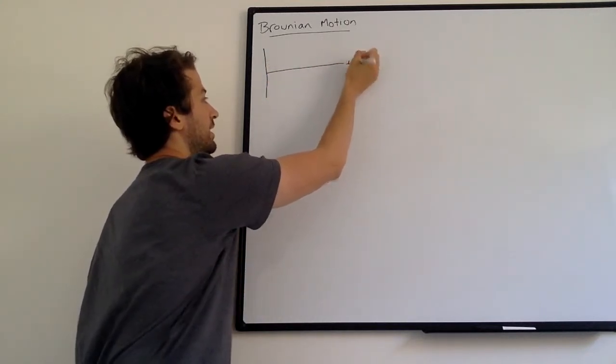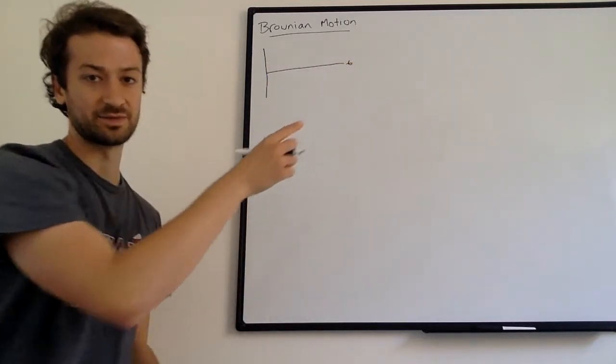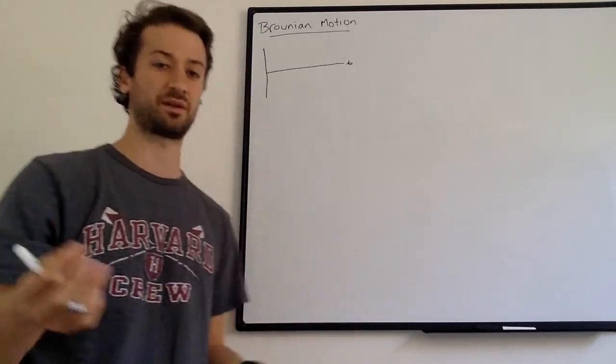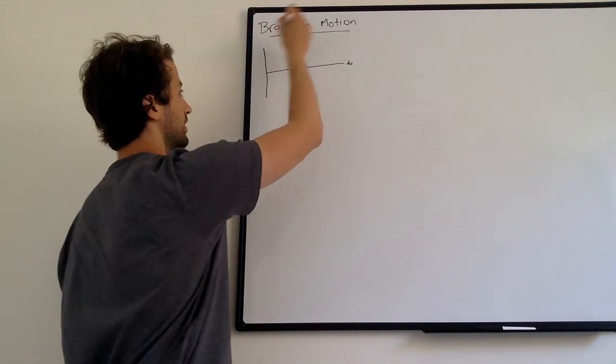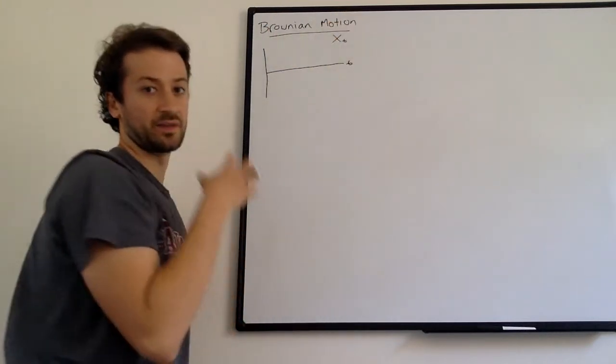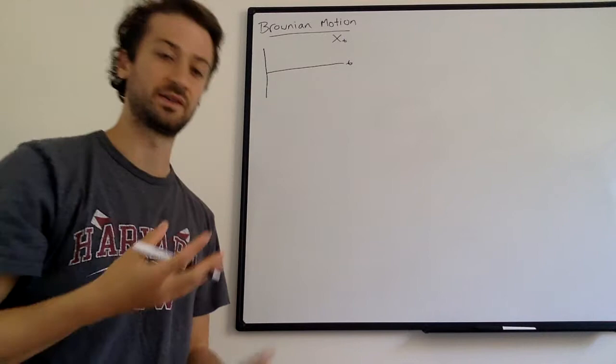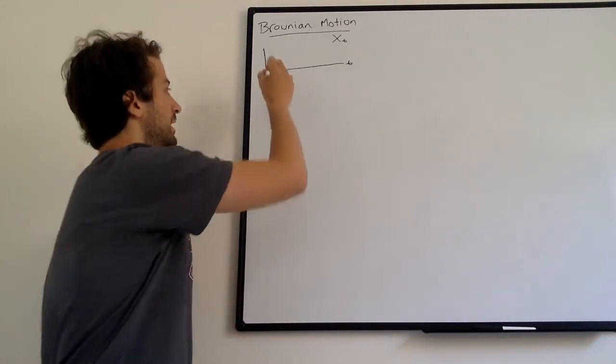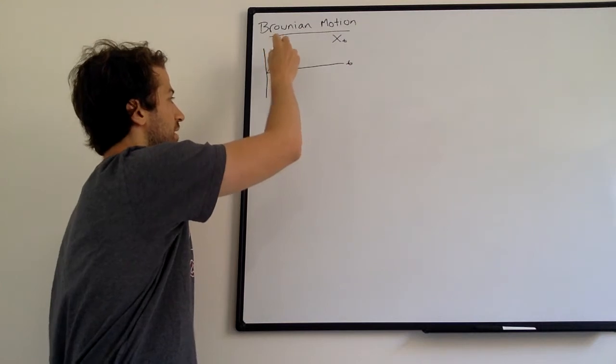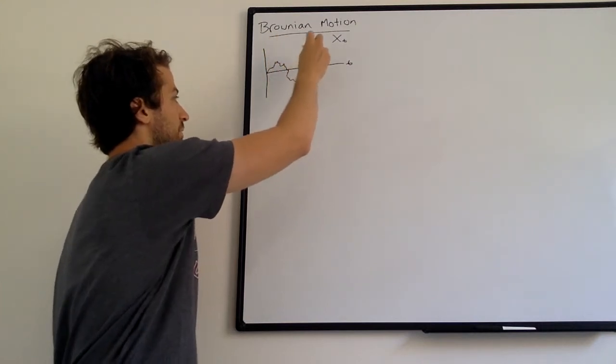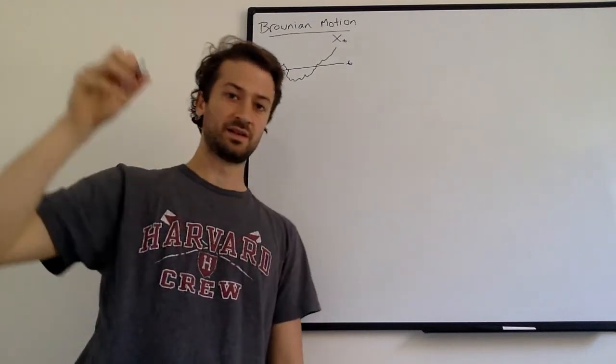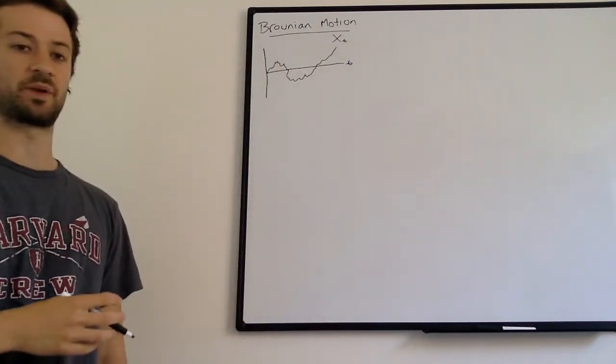Here I've got my x-axis, which is time. Remember, stochastic process means a random variable that evolves throughout time. I'll call my variable x sub t, capital X, random variable, sub t means it's indexed at time t, but it has different values. And a Brownian Motion might look something like this. Okay, it kind of just looks like a random thing bumping along.